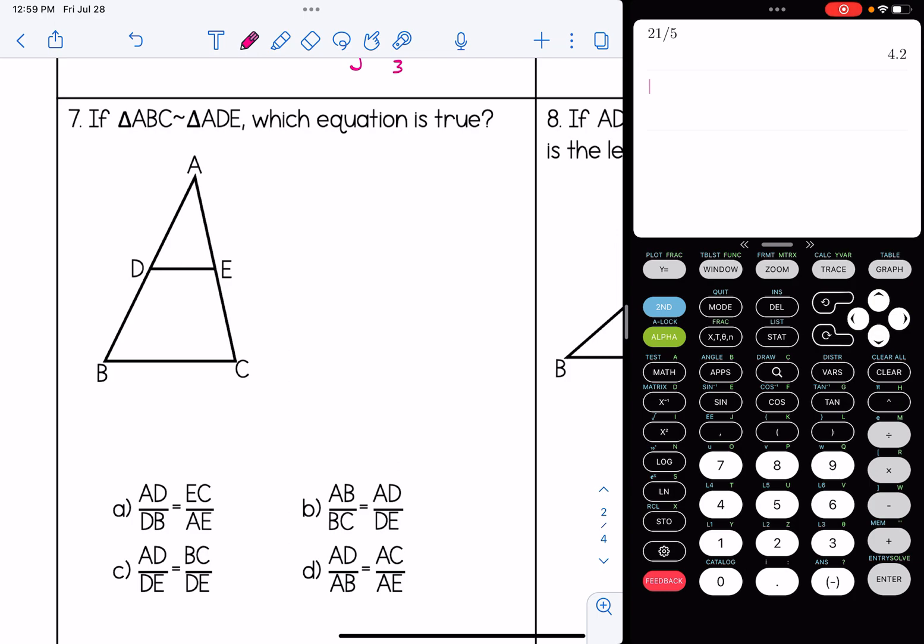A says AD to DB is equal to EC and AE. If you notice, we went down this side of the triangle and up this way. That's not consistent. Those are not labeling the corresponding sides appropriately. So A is not the correct answer. I'm basically going to keep doing this till I can find corresponding sides that work out, and eventually I will get my correct answer here.